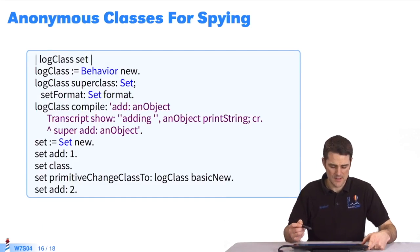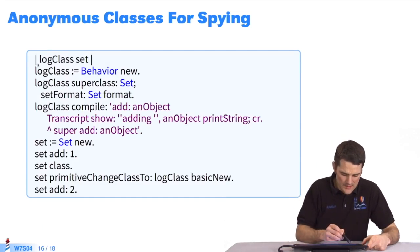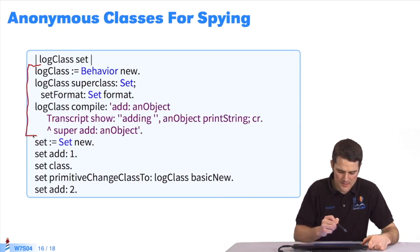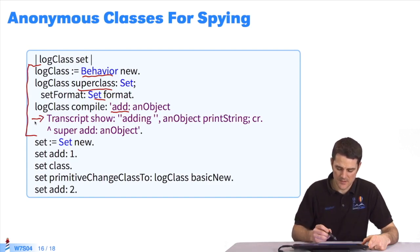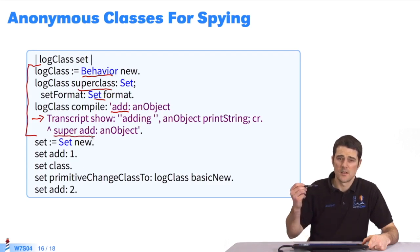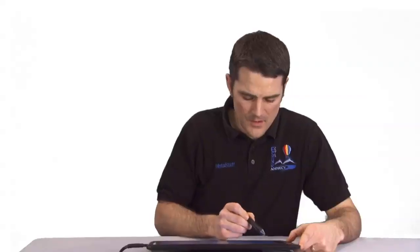Here is the code to conduct this exercise. Just like before, I create a class, as an instance of behavior class. I set the super class at setClass. I set the format. I compile the method add in this anonymous class. I'm redefining the method add that is defined in setClass. I use transcript show to display the execution of the method add. Then I call super to execute the method add in setClass. Now, we'll test this code by creating a first set.